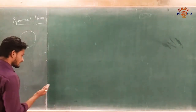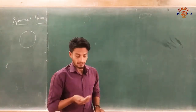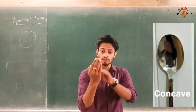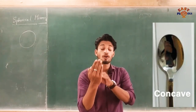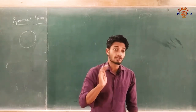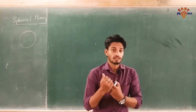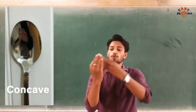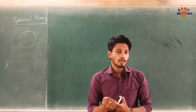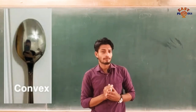For example, we will take a spoon. You will see your face in the spoon. If we look at the inner reflecting surface, it is like a cave — we call this a concave mirror. If we look at the outer reflection of the spoon, we call this a convex mirror.